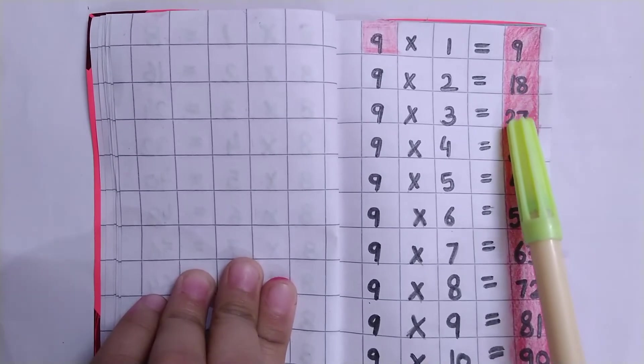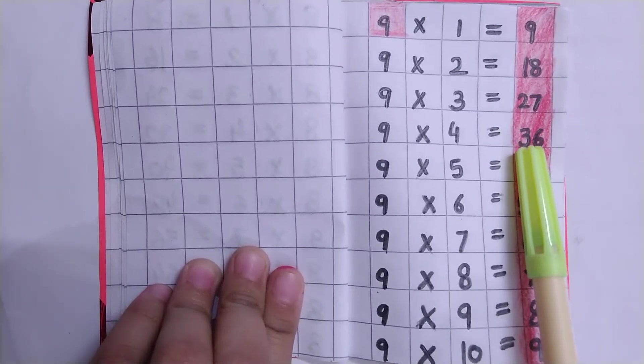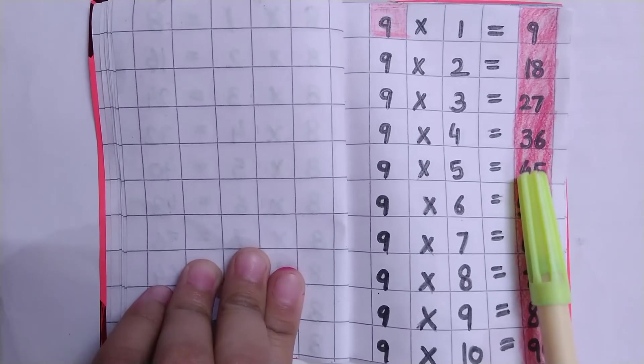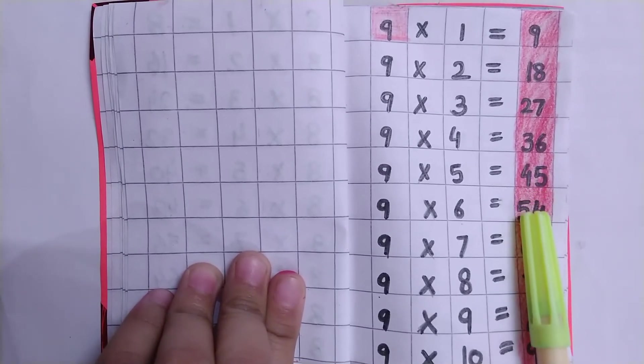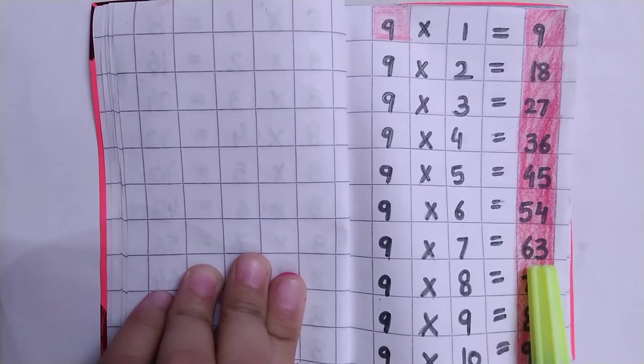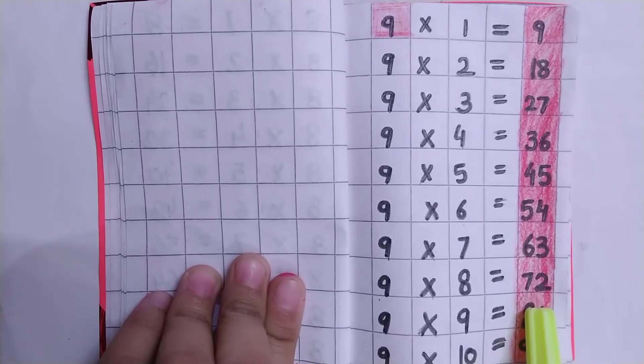Table of 9: 9×1=9, 9×2=18, 9×3=27, 9×4=36, 9×5=45, 9×6=54, 9×7=63, 9×8=72, 9×9=81, 9×10=90.